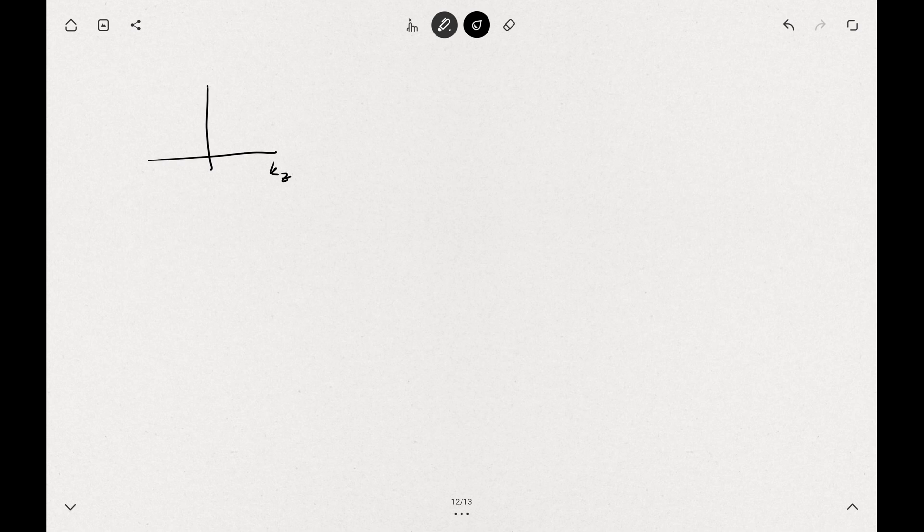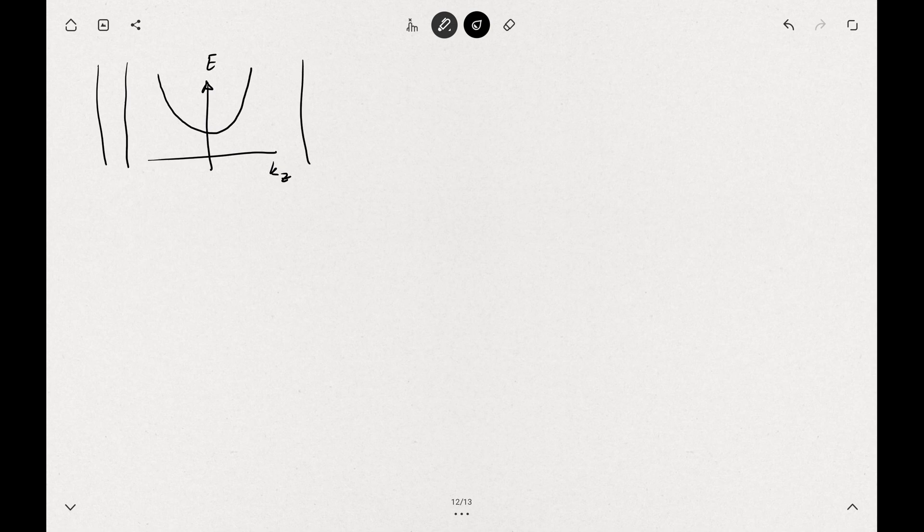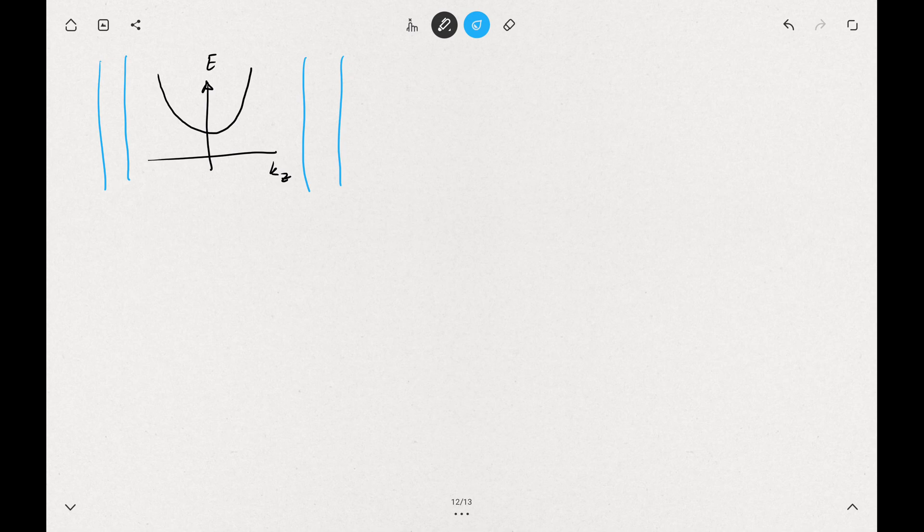Now let's discuss what will happen if you put this nanowire between the contacts and apply electric field. So we can draw the diagram like that. We will have kz, the momentum which is not quantized, and the energy scale. Assuming the free particle model, we have a parabolic dispersion relation. Then we have the electrodes attached to this nanowire. We apply the bias voltage. There will be a difference in the chemical potentials on the left and right electrode. Let's call this one mu source, this one mu drain. The distance between those is our bias voltage, E times Vb.